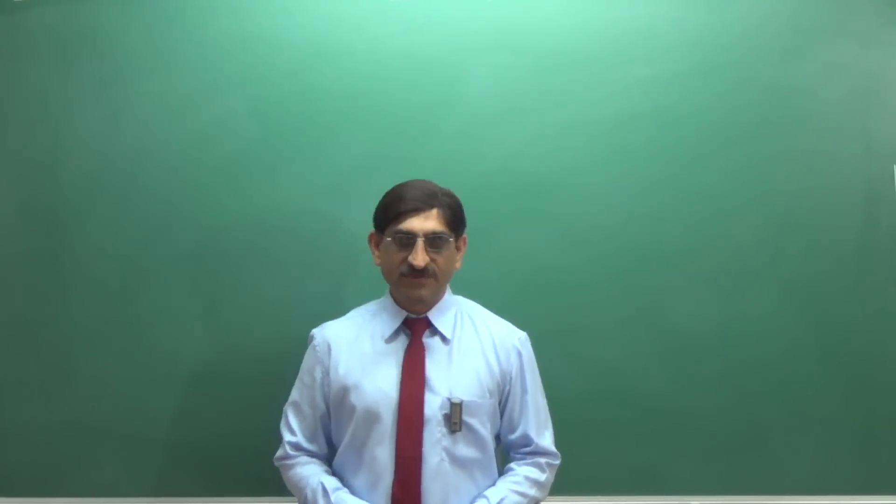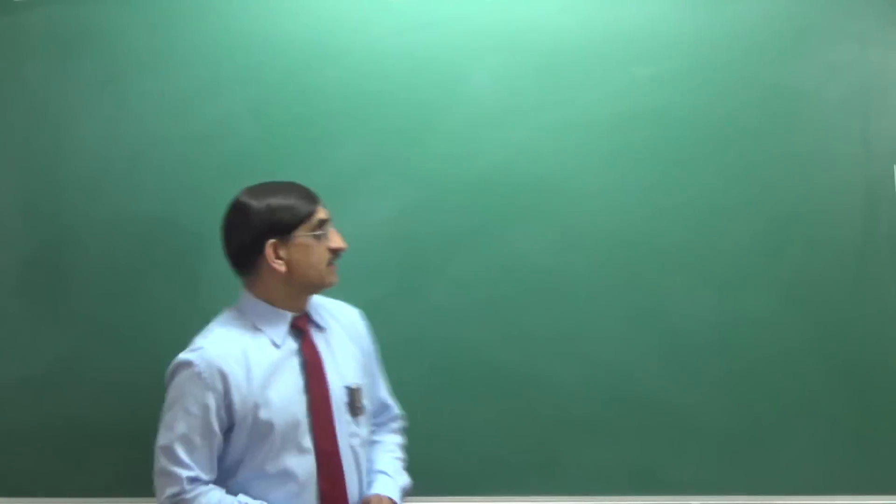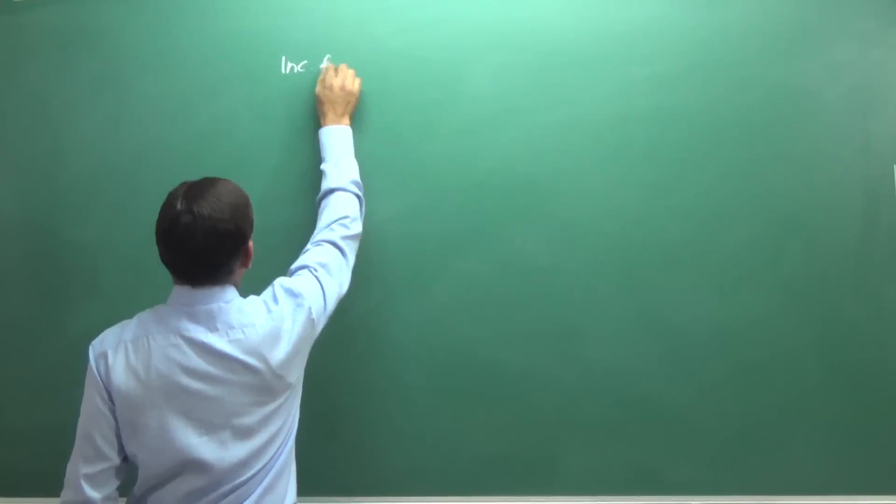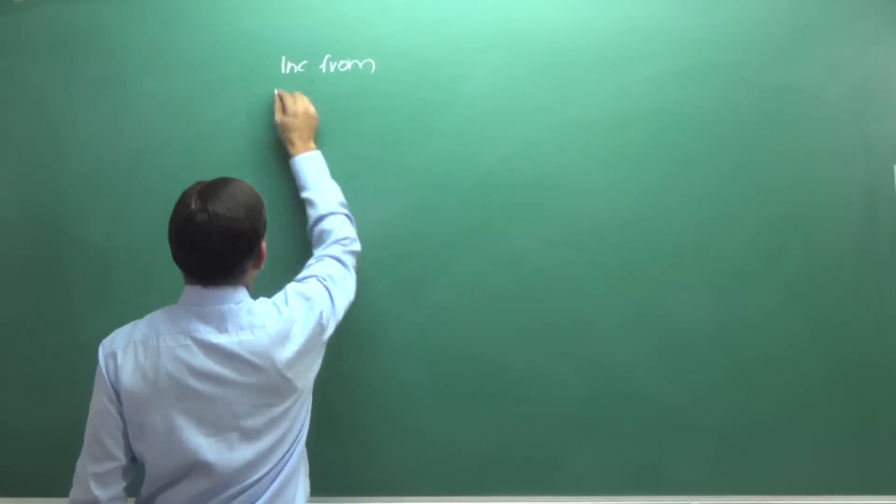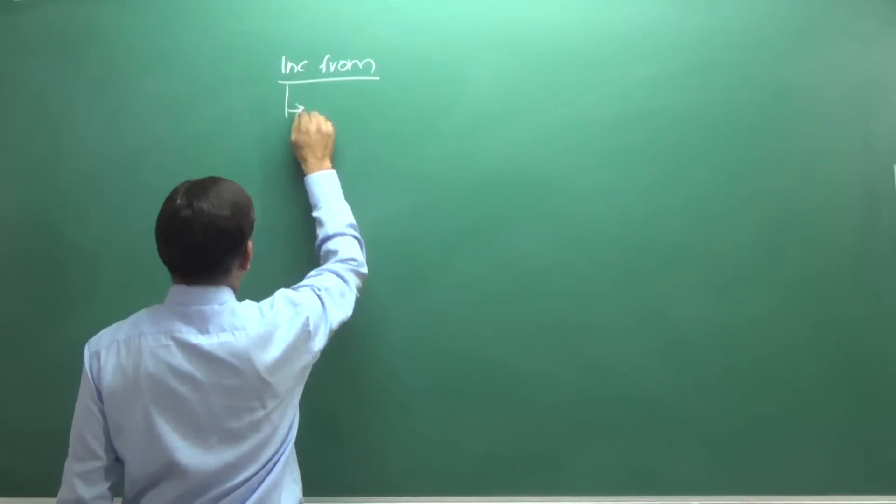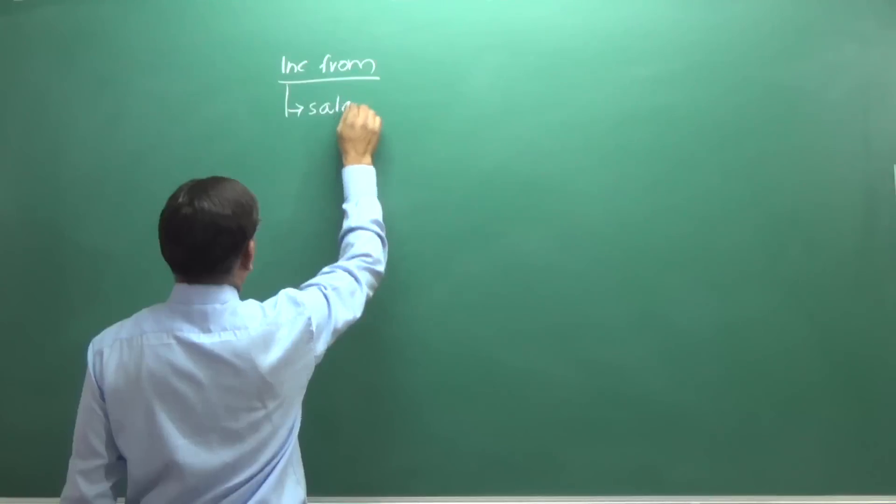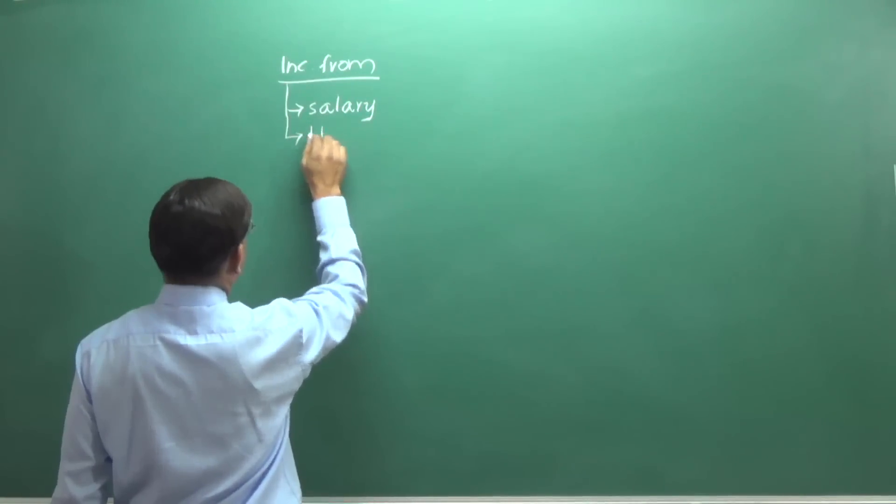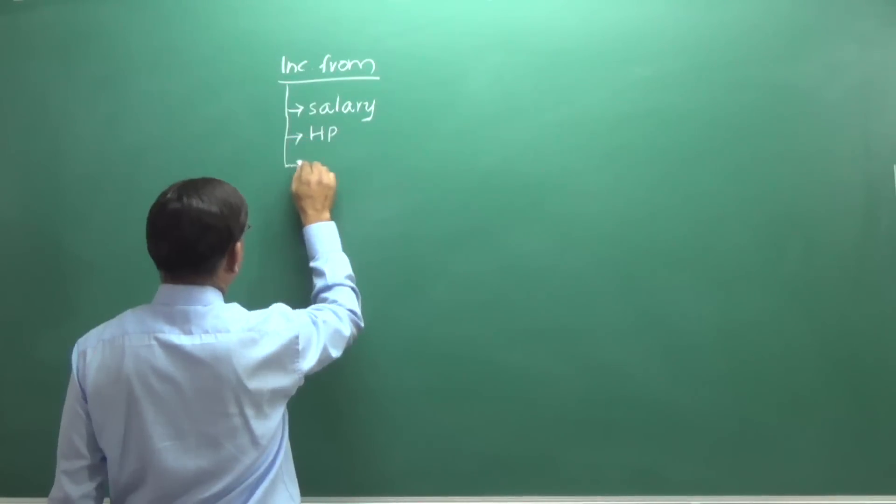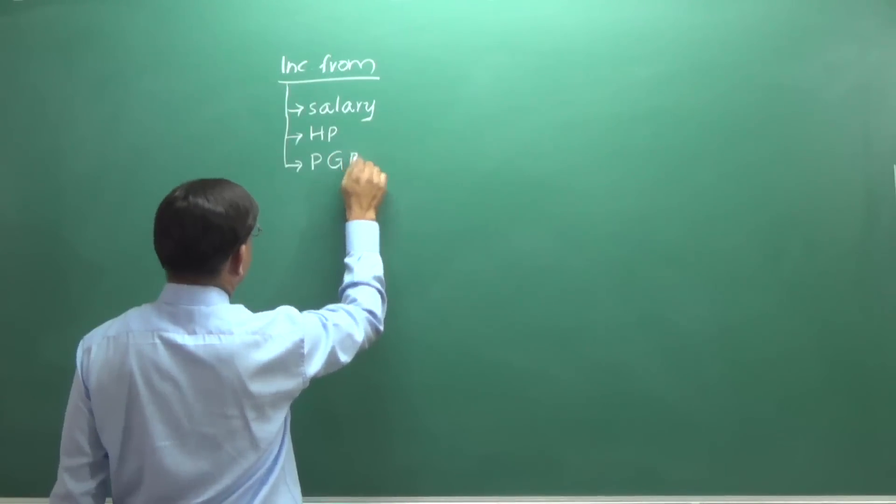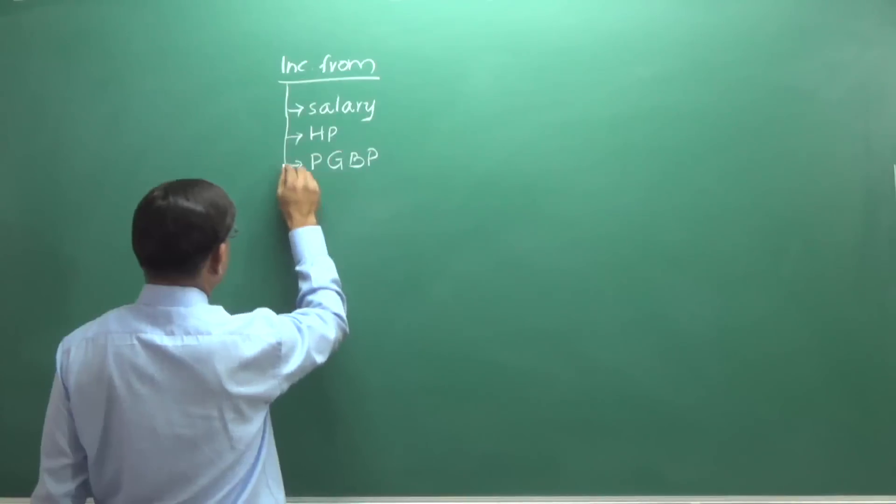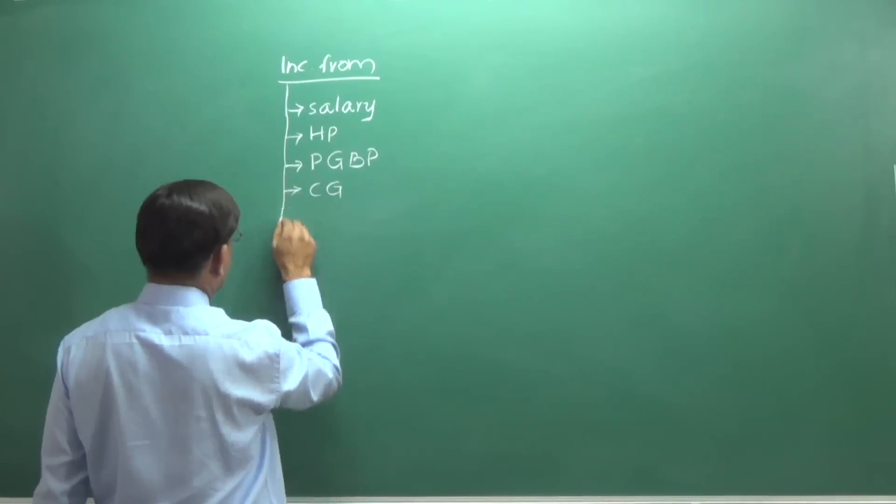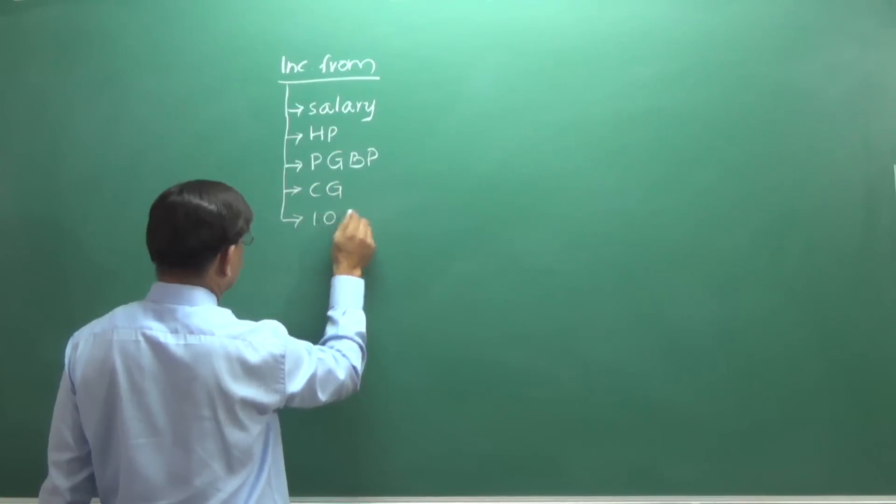there are five heads of income. They are income from salary, income from house property, income from profits or gains from business or profession, income from capital gains, and income from other sources.